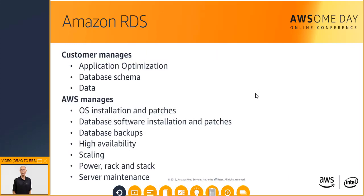Amazon RDS manages operating system installation and patching, database software installation and patching, automatic backups, and high availability. Scaling resources, managing power and servers, and performing maintenance is also covered by AWS. In short, all of the undifferentiated heavy lifting is offloaded to the managed Amazon RDS service, reducing your operational workload and the costs associated with your relational database.